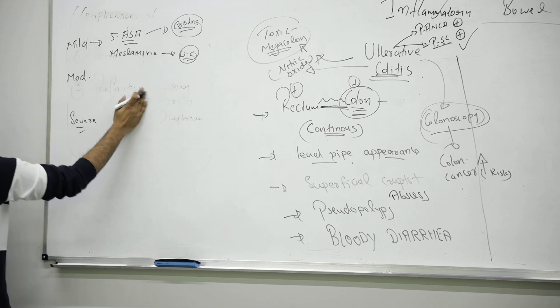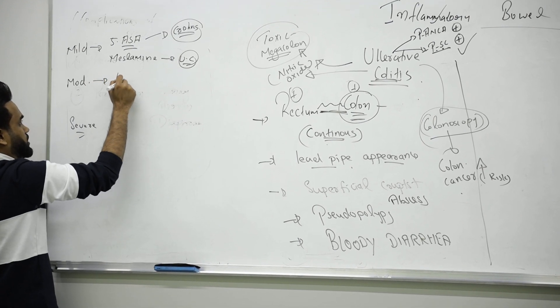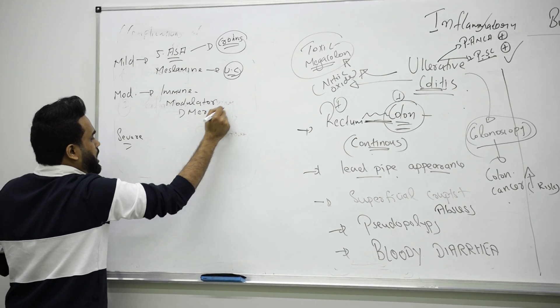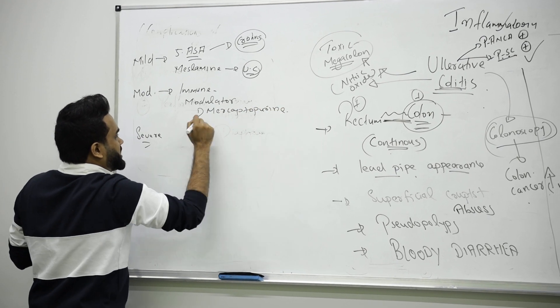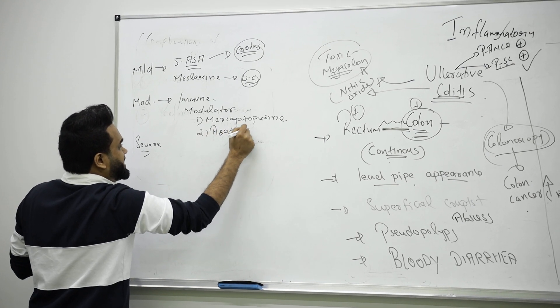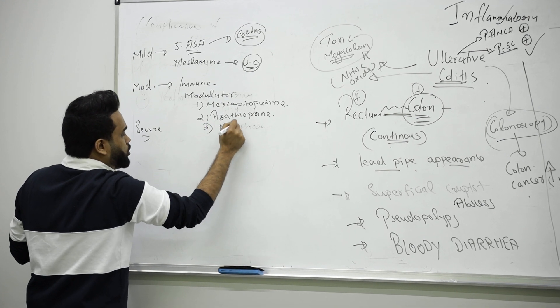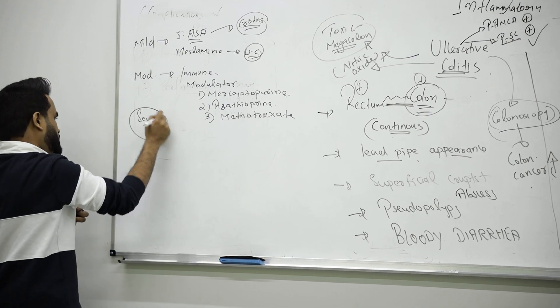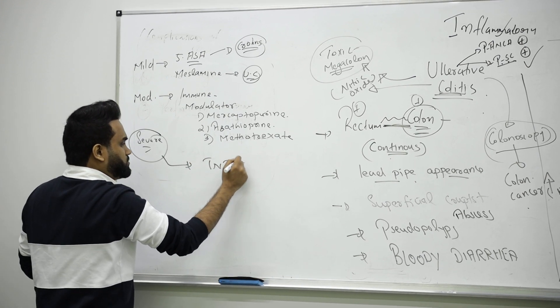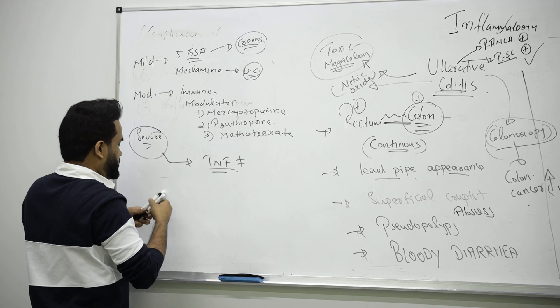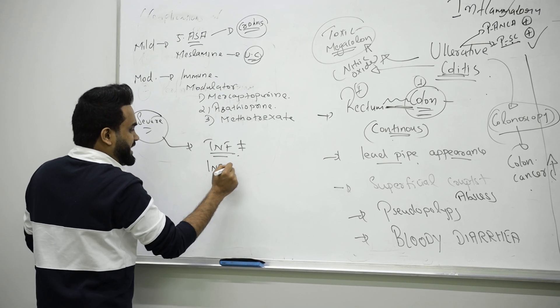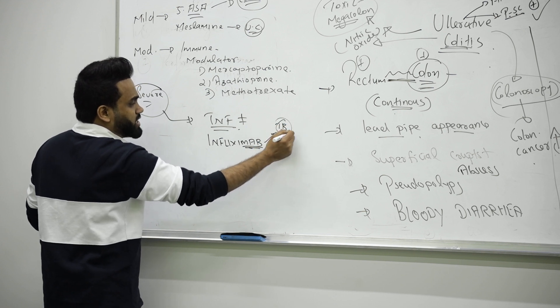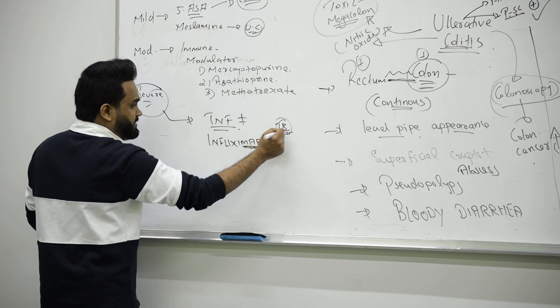For moderate we use immune modulators like mercaptopurine, drugs like azathioprine, or anti-cancer drugs like methotrexate. For severe cases we use tumor necrosis factor inhibitors - immune modulators like infliximab, a monoclonal antibody modulator. Remember, the patient will have TB as a side effect or risk. If a patient has risk of TB, make sure you don't give this drug or screen for TB in this patient.